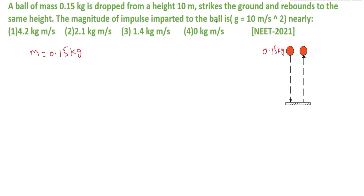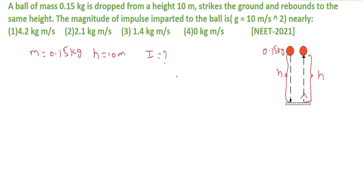It is dropped from a height H of 10 meters, strikes the ground and rebounds back to the same height. The magnitude of impulse imparted to the ball is — you have to calculate impulse.